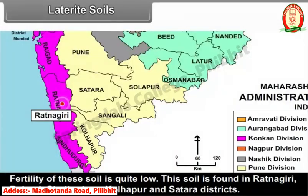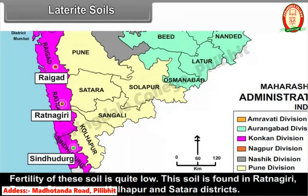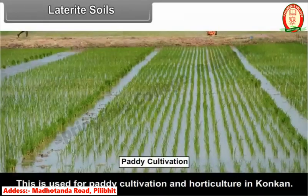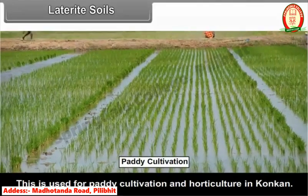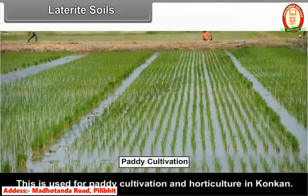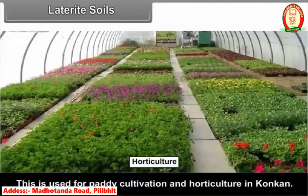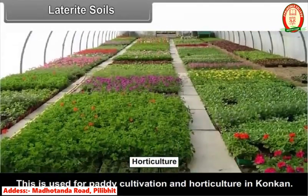This soil is found in Ratnagiri, Raigad, Sindhudurg, Kolhapur, and Satara districts. It is used for paddy cultivation and horticulture in Konkan.